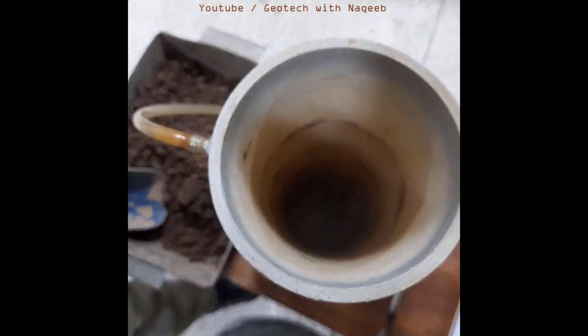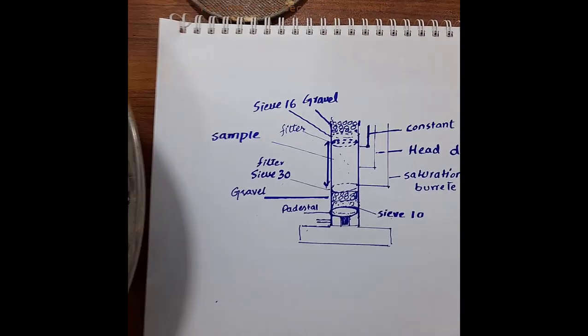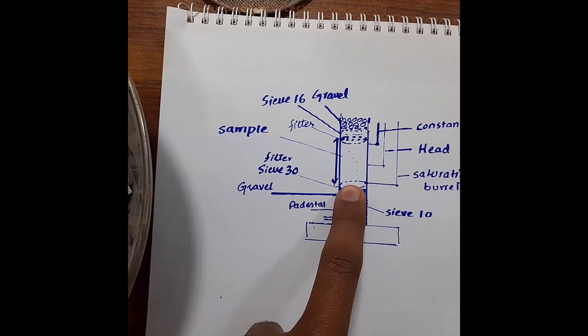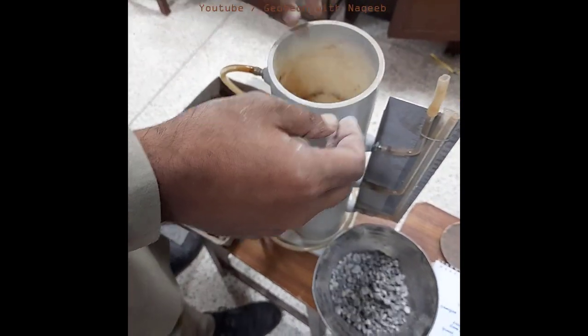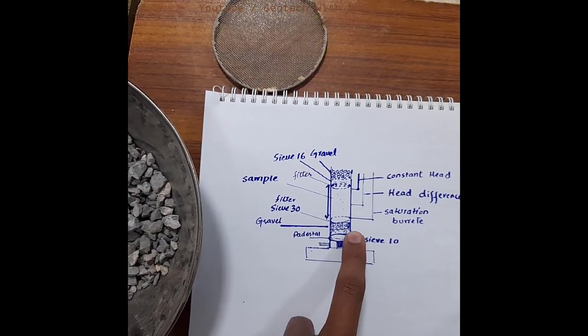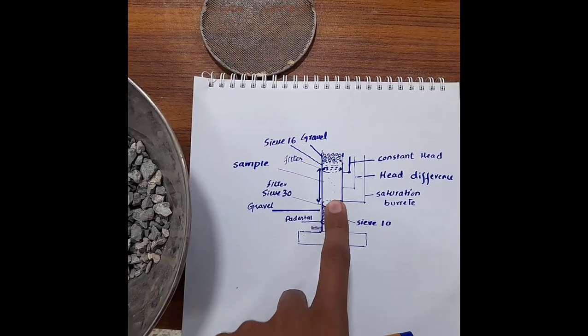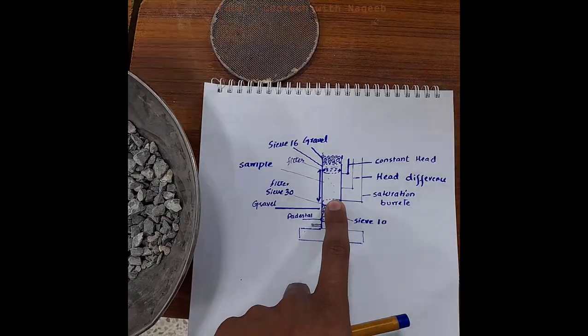The gravels have been placed in the mold up to the saturation burette level. Next, we place sieve number 30 over the gravel, and then a filter paper over sieve number 30. This much of the mold height is now filled with the assembly. We then place the remolded soil sample over the filter paper and tamp it with a wooden rammer.